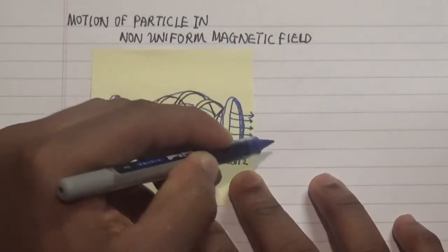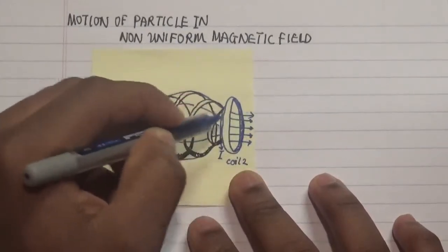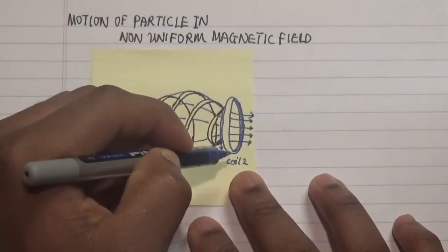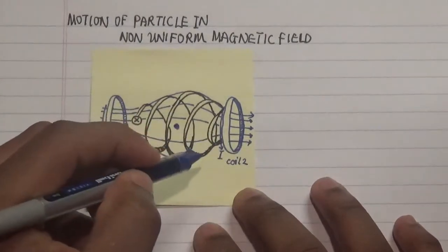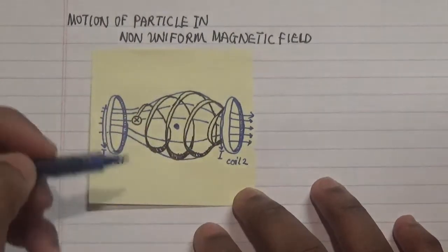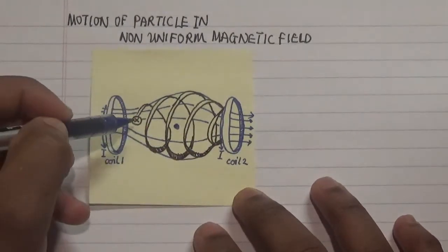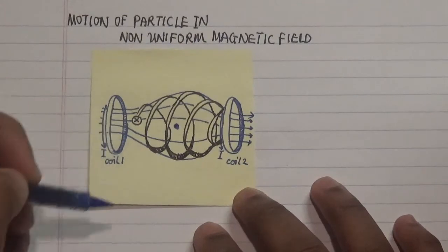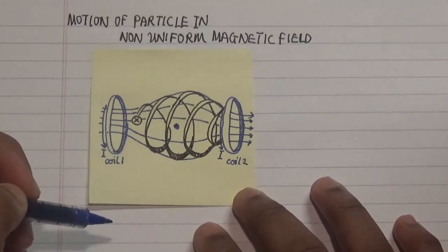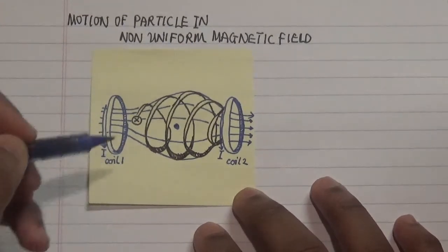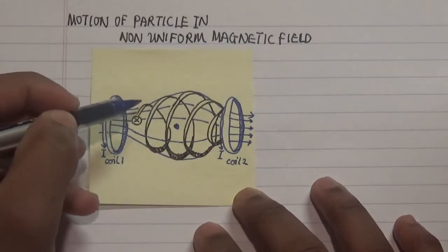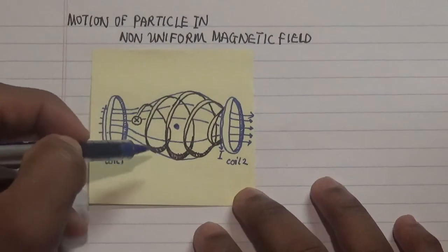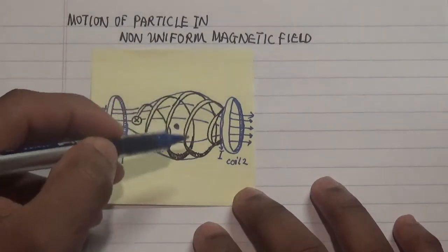Once that magnetic field is generated, we place a charged particle in it, and what we see is that this charged particle shows us the geometry of the magnetic field by its motion.